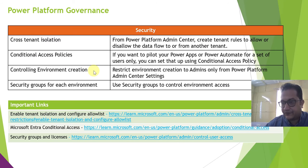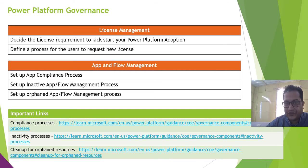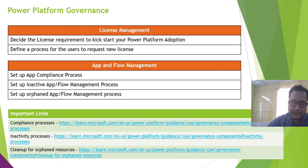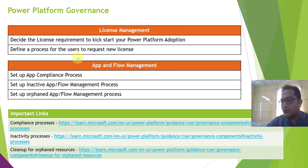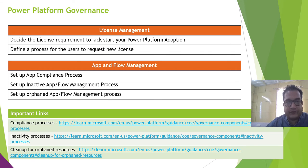Next is license management. You have to decide on license management to kick-start your Power Platform adoption, because every product in Power Platform comes with its own licenses — Power Apps licenses, Power Automate licenses, Power BI licenses, and so on. You have to define a license requirement strategy and a process for users to request a new license, because end users may not be able to use certain features due to license issues.